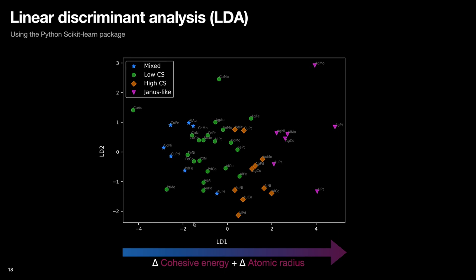Because here on the left side of the axis, we see more of mixed structures, and as we move to the other side of the axis, we see more of highly segregated structures like high core-shell structures and Janus-like structures. The method was quite good at separating the different types of structures.